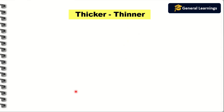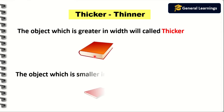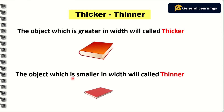Next we are going to see thicker and thin. The object which is greater in width will be called thicker — thicker means the width of an object should be greater. Here they have given a book whose width is more, so that book will be called thicker. The object which is small in width is called thin — thinner means the width of an object should be small. They have given another book whose width is very small, so that will be called thinner.